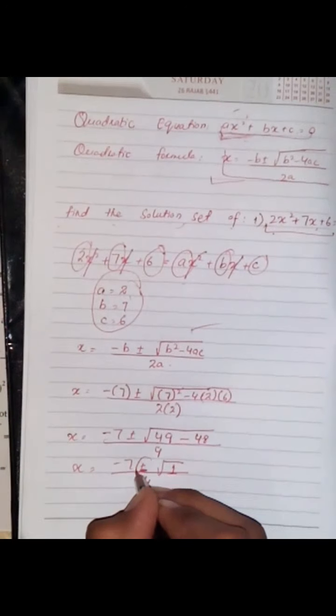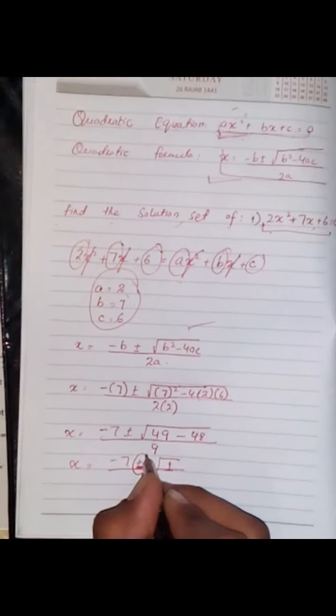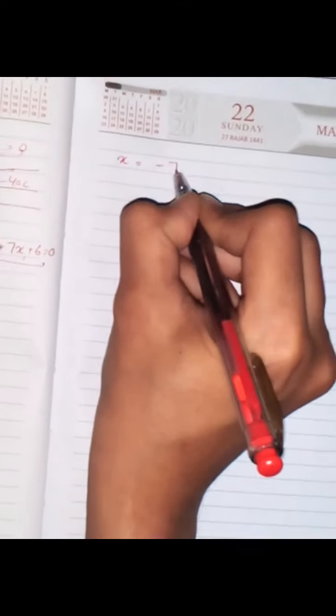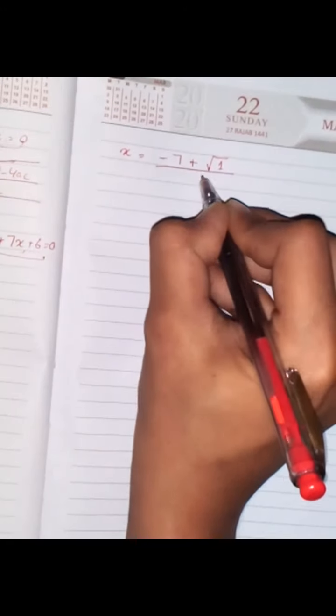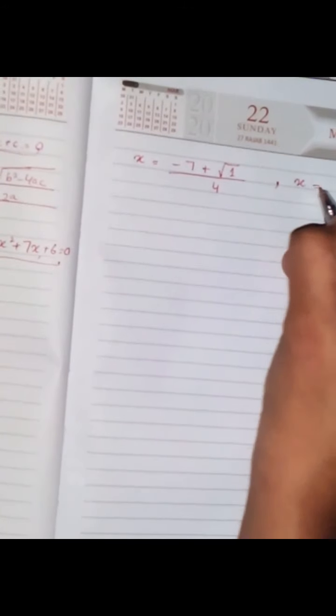Now we have a double sign with it, plus and minus, so we have to write this two times: plus √1 divided by 4, then one time with minus.